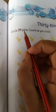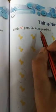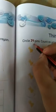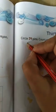So now come to the next page. So here you have to circle 39 pins. Count as a circle. So let's start. So circle 39 pin.